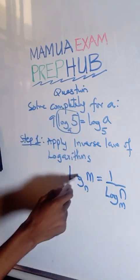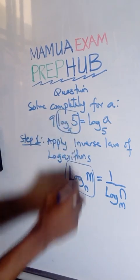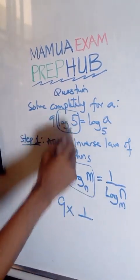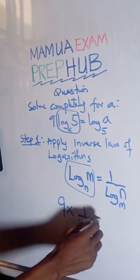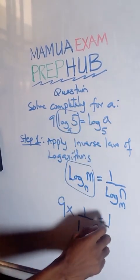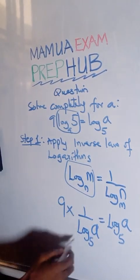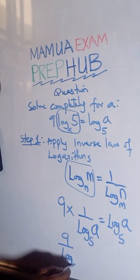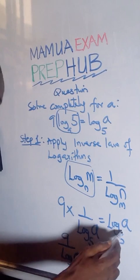So if I apply this here, like we have it here, it is going to be 9 times this becomes 1 over. So I am going to swap this. So I have log base 5 of a equals log base 5 of a. Now we can multiply 9 times 1 is 9, and we have log base 5 of a.